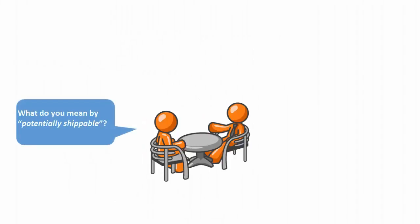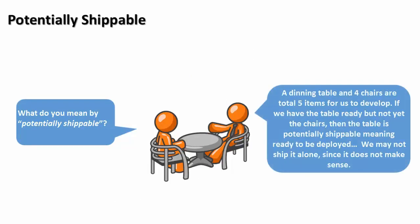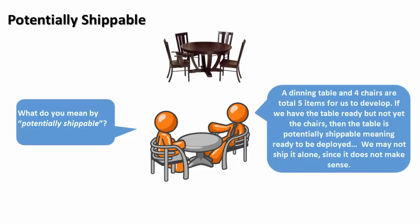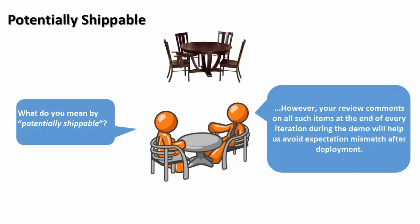What do you mean by potentially shippable? A dining table and 4 chairs are total 5 items for us to develop. If we have the table ready but not yet the chairs, then the table is potentially shippable, meaning ready to be deployed. We may not ship it alone since it does not make sense. However, your review comments on all such items at the end of every iteration during the demo will help us avoid expectation mismatch after deployment.